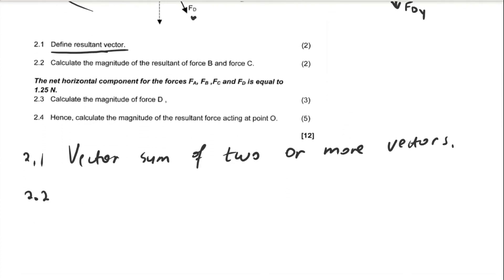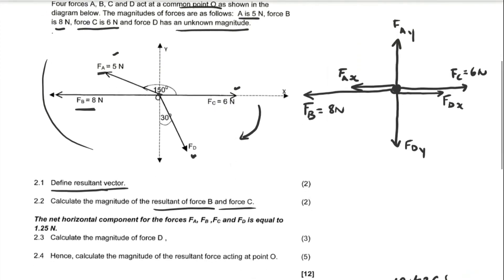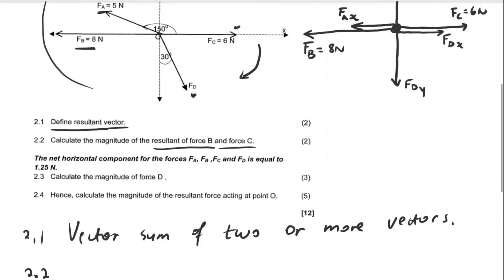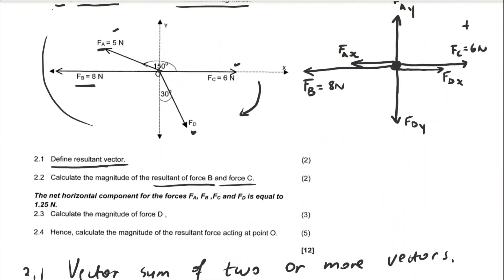Question 2.2: Calculate the magnitude of the resultant of force B and force C. Referring to our free body diagram, FC is along the positive x-axis so it gets a positive sign, while FB is along the negative x-axis so it gets a negative sign.